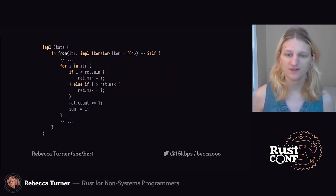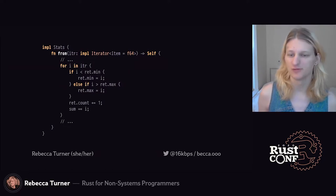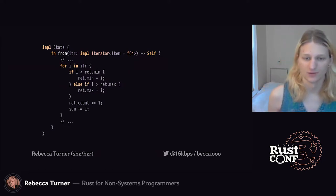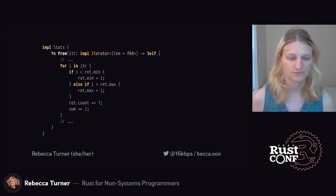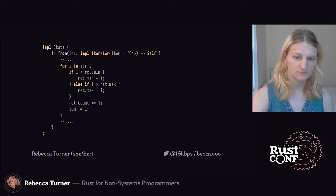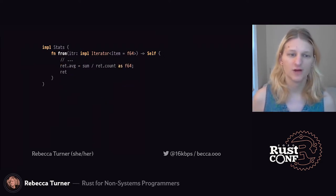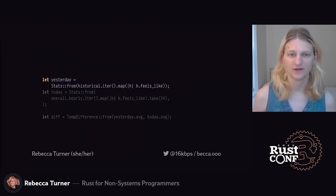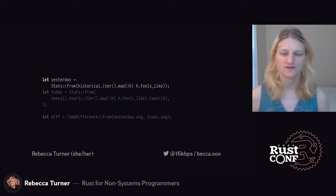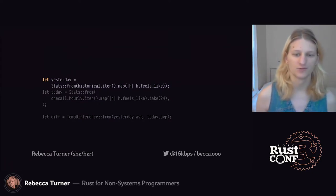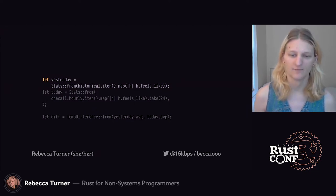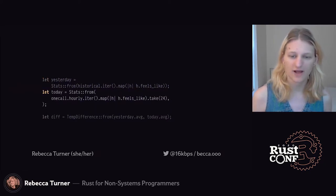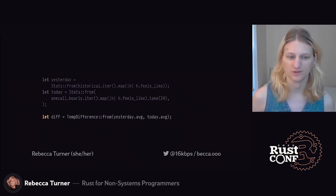Next, we take each value in the iterator and update the return value's minimum and maximum values if applicable, as well as the element count and running total. Finally, we compute the average value and return. Then we can gather the temperatures for yesterday into a `Stats` object. Because we're using lazy iterators, mapping each data point to the temperature it felt like doesn't require writing a whole new array — we just generate the data as we go with no storage overhead. We can do the same thing with our forecast, limiting it to 24 hourly data points, and then get a temperature difference between the two days.